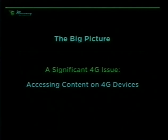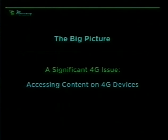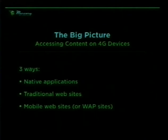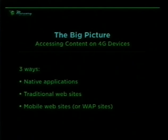Now, I want to switch subjects a little bit and talk about a really significant fourth-generation computer issue. How do you access content on a fourth-generation computer? Well, there's three ways. You can build what's called a native application, or you can use the browser and go to traditional websites, or you can go to mobile websites.